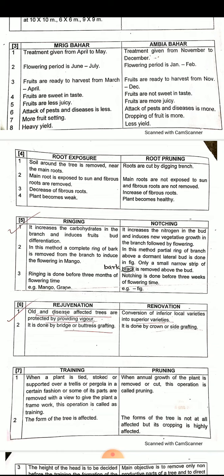In notching, it increases the nitrogen in the bud and induces new vegetative growth, followed by flowering. So in ringing there is direct flowering and fruiting, while in notching there is first vegetative growth and then flowering and fruiting.